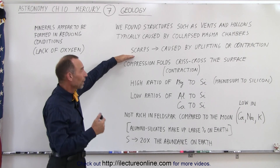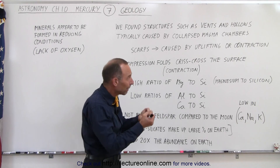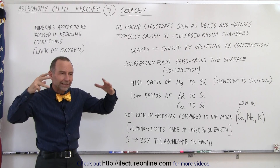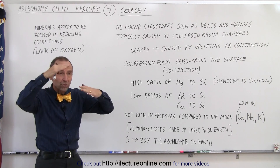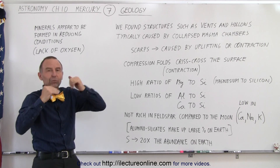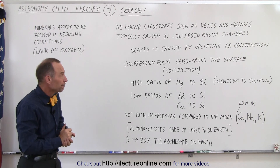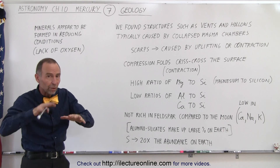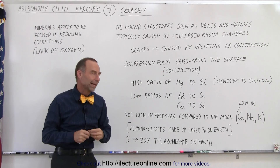We do find scarps all across the planet, and those are caused by either uplifting or by contraction. Contraction means that as a planet cools, the density tends to increase and the volume tends to decrease. In some places it contracts more than others, forming scarps, or sometimes we have uplifting because of volcanic activity. We also find compression folds that crisscross across the surface of the planet.